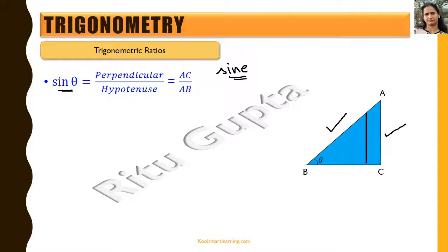Suppose we move AC to any of these positions — if we move AC towards angle theta, we are making AC smaller and smaller, and we can see that AB accordingly becomes smaller in the same proportion. That is why we say that the trigonometric ratios do not depend upon the actual value of the sides of this triangle; they depend only on the acute angle theta.